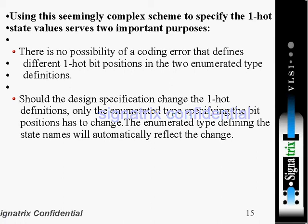This is all about encoding using a reverse case statement style. Here we have some more points. Using this seemingly complex scheme to specify the one-hot state value serves two important purposes. The first one is: there is no possibility of coding error that defines different one-hot bit positions in the two enumerated type definitions.